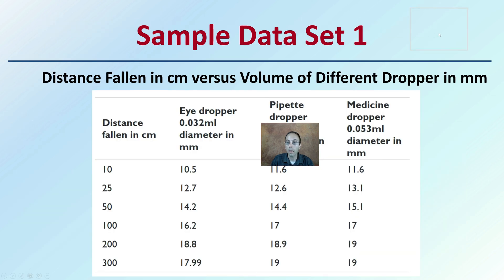Now a sample data set, we're looking at the distance fallen in centimeters versus volume of different droppers in milliliters. We can see the distance fallen 10, 25, 50, 100 centimeters. Eyedropper produces 0.032 milliliters, pipette 0.045, and medicine dropper 0.53. The amount of volume does impact generally the size of the droplet. But if you're keeping that fairly consistent, you can use it as a source of comparison. This is something to keep in mind when evaluating a crime scene where you may not know the volume initially of blood that fell.